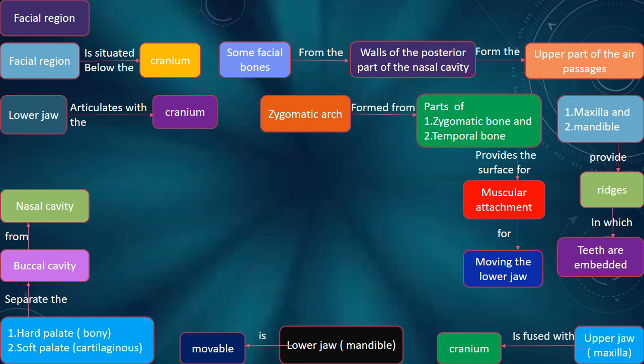The upper jaw (maxilla) is fused with the cranium. The lower jaw (mandible) is movable.